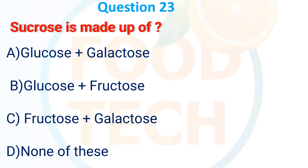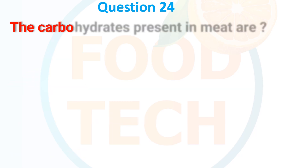Question 23: Sucrose is made of — A. Glucose and galactose, B. Glucose and fructose, C. Fructose and galactose, D. None of these. The answer is B. Glucose and fructose.